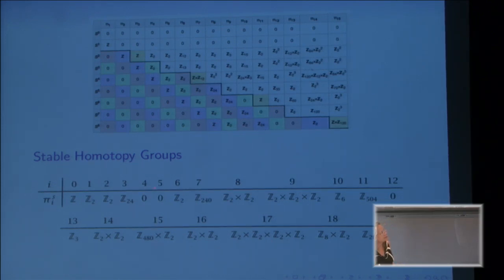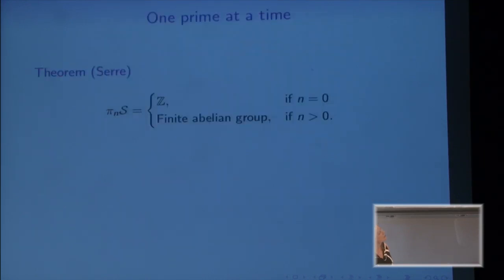In this table I list some of these stable homotopy groups. Some of them are in this big table: Z, 0, Z/2, 0, Z/2, 0, Z/24. They're here and then I list a little bit more. I would like to point something out about them: except for the zero one, they are all finite and abelian. That's the theorem of Serre.